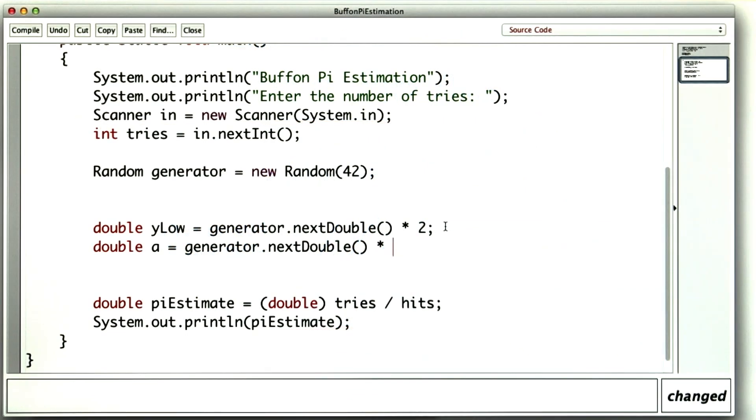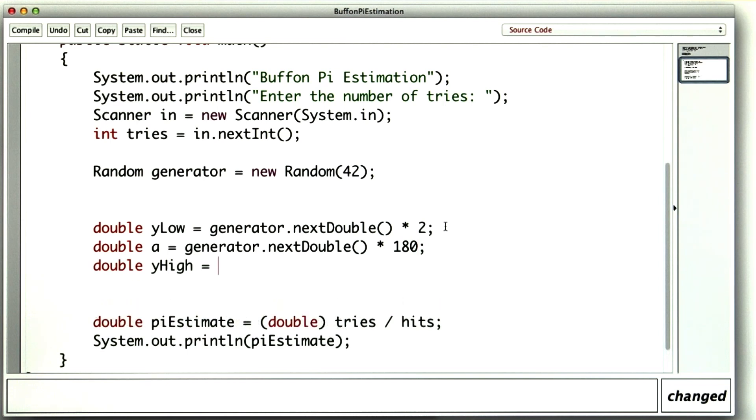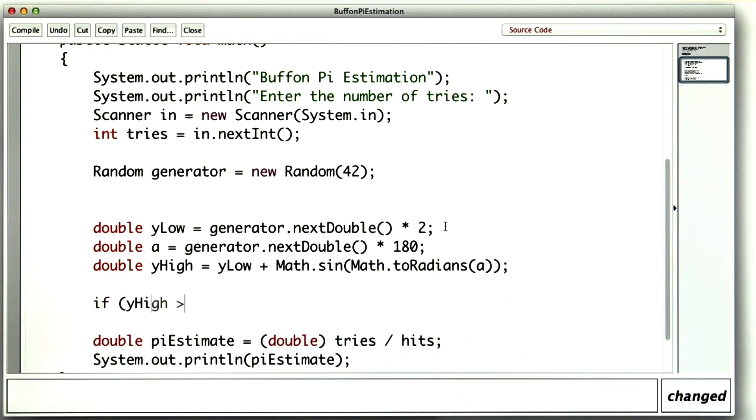Then I'll generate another double between 0 and 180. And I'll use both of those to calculate y-high, which is y-low plus the sine of a in radians. Now, if y-high is greater than or equal to 2, then I increment the number of hits.